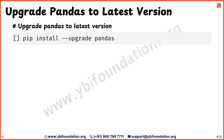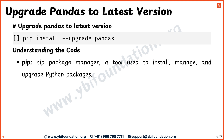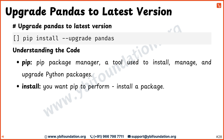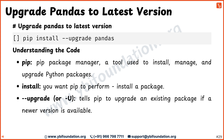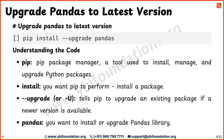Now, explore how to upgrade pandas to the latest version. We start with pip, which is the pip package manager. Then, we have install, asking pip to perform installing or upgrading a package. Next, we have --upgrade, which tells pip to upgrade an existing package if a newer version is available. And finally, pandas is the specific package you want to install or upgrade. So the full command pip install --upgrade pandas is telling your environment to upgrade pandas to the newest available version using pip.